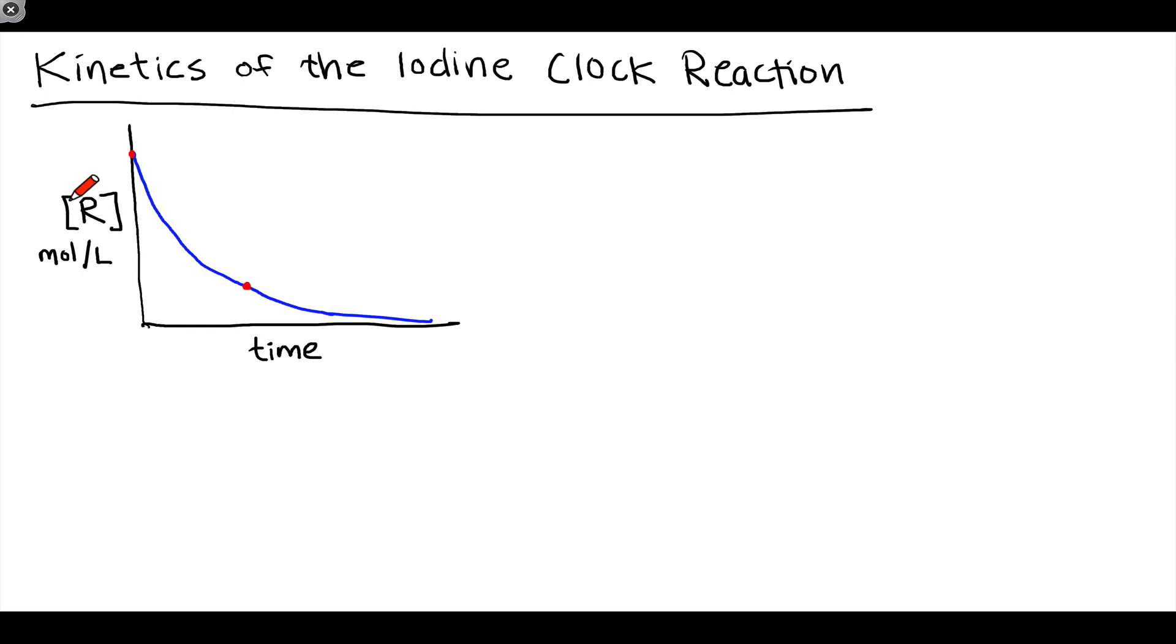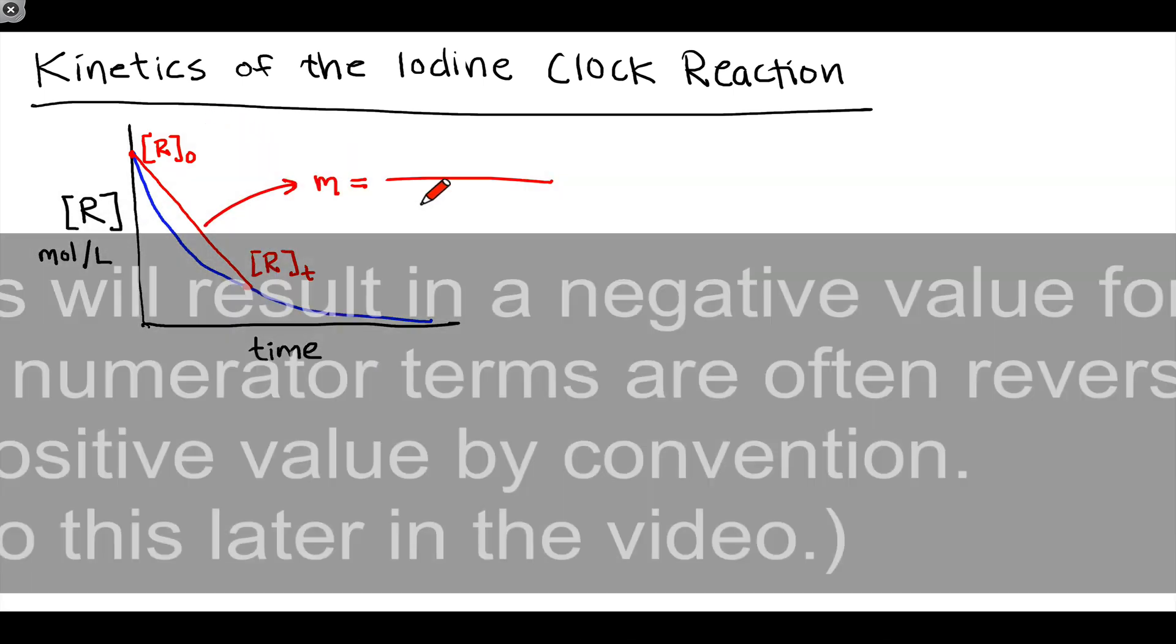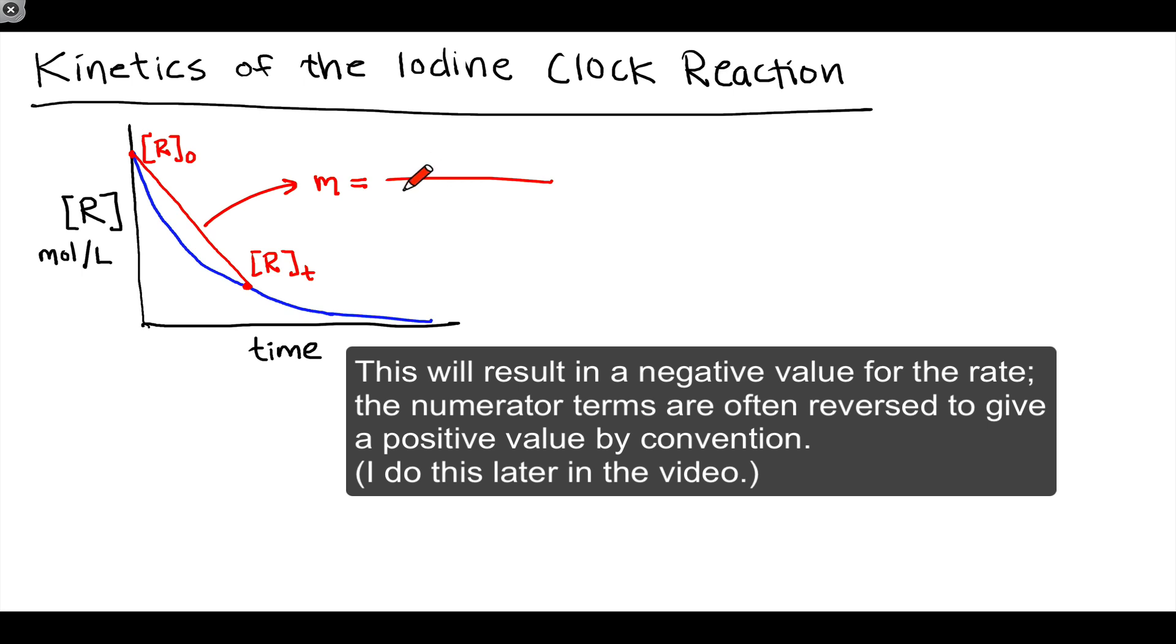For example, we can look at the concentration of R at the start of the reaction and the concentration of R at some later time point T. Let's label those RT at the later time point and R0 for the initial concentration. The average rate of consumption of R is simply the slope of the line connecting those two points. We think about that slope as rise over run.